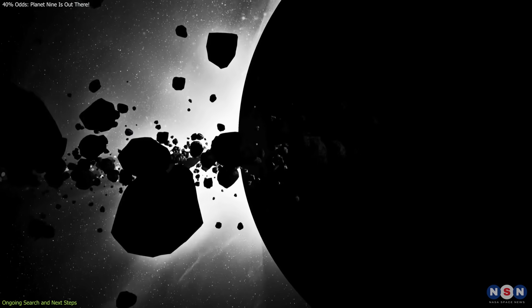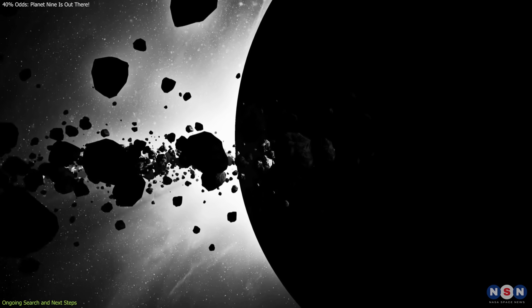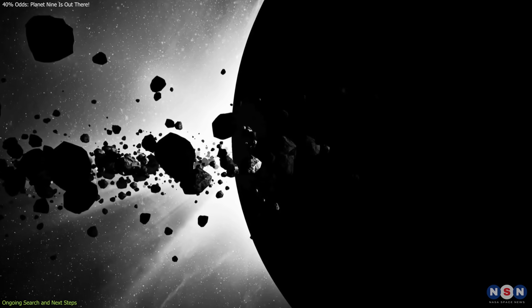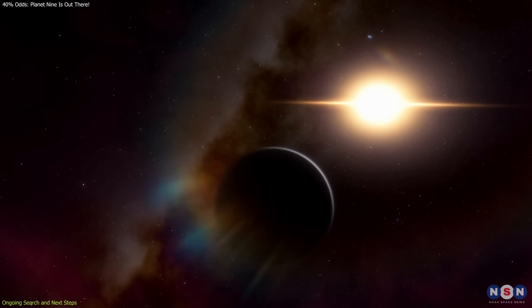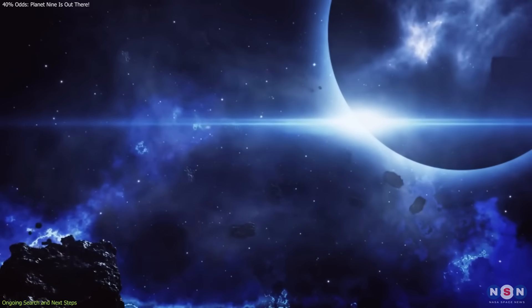Planet 9 remains undetected largely due to its extreme distance and faintness. Orbiting hundreds of astronomical units from the Sun, it receives minimal sunlight and reflects very little, making it exceptionally difficult to spot.